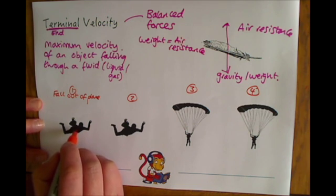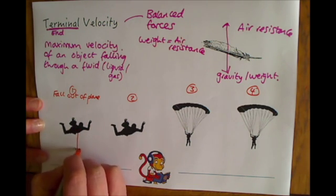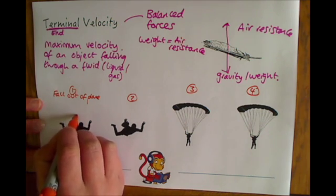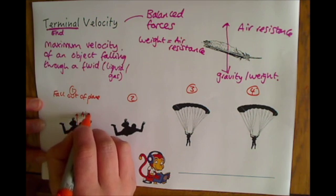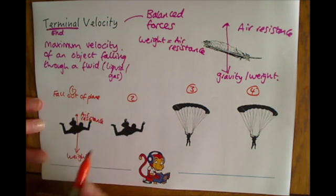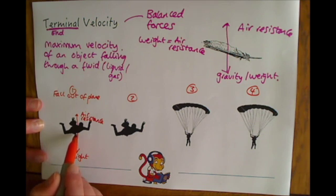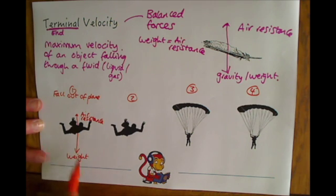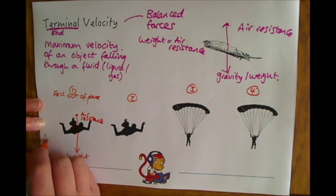Initially, when the parachutist falls out of the plane, you've got weight acting downwards — or you might see it as gravity — and air resistance acting in the opposite direction. Now, because weight is a greater force than air resistance as soon as he jumps out of the plane, we've got a resultant force downwards, and therefore the man is accelerating.